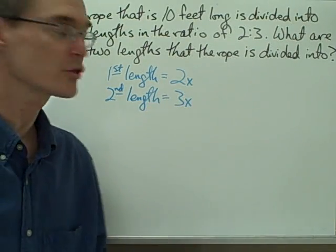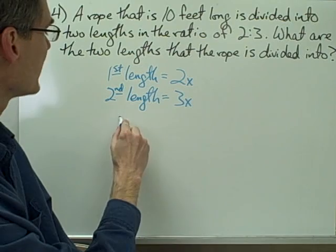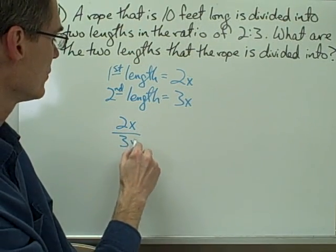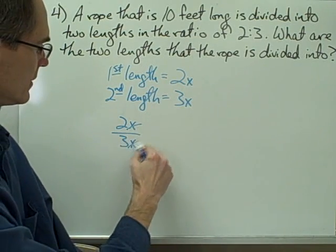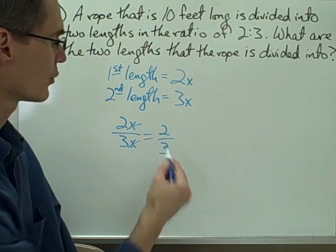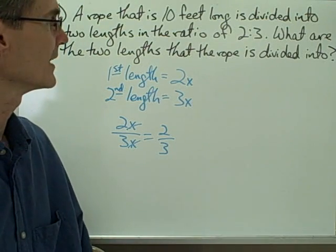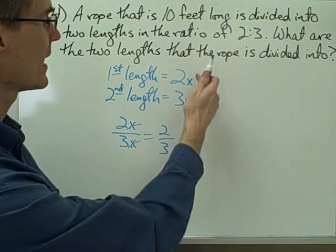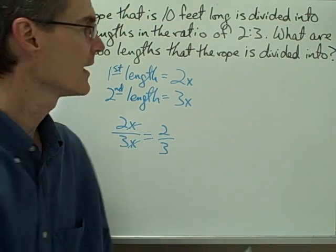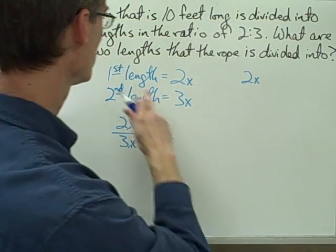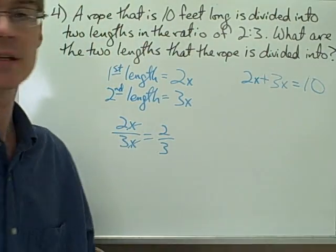The reason I chose 2x and 3x is that even though I don't know the actual numerical value of the lengths, I do know that the ratio of 2x to 3x — no matter what x is — the x's will cancel out and leave me with a ratio of two to three. So once I've chosen 2x and 3x for the two lengths, and since the rope is ten feet long, I can write an equation: the first length plus the second length equals 10, the whole length of the rope.